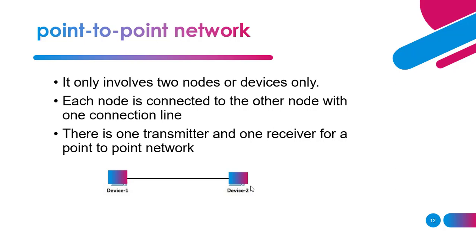So what we have learned is that in a P2P network the devices are connected together and there is no central device or server involved, whereas in the point-to-point network there are only two devices — the communication is between two devices only, where one device is the sender or transmitter and the other device is the receiver.